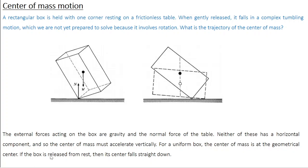The motion proceeds until the two forces cancel and the object comes to rest. As the box falls, the center of mass moves straight down. When it finally settles on the table, gravity and the normal force are aligned and cancel each other. So simply by monitoring the trajectory of the center of mass — without detailed mathematical analysis — we gain insight into the system's overall motion. That is the importance of the center of mass concept.